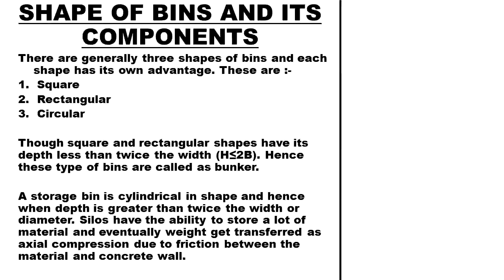There are generally three shapes of bins, each with its own advantage: Square, Rectangular, and Circular. Square and rectangular shapes have a depth less than or equal to twice the width (h ≤ 2b), and hence these types of bins are called Bunkers.